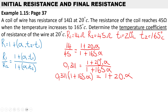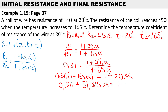Expanding the bracket: 0.311 times 1 gives 0.311, and 165 times 0.311 gives 51.315. So the left side becomes 0.311 plus 51.315 times the temperature coefficient, and on the right side we still have 1 plus 20 times the temperature coefficient.